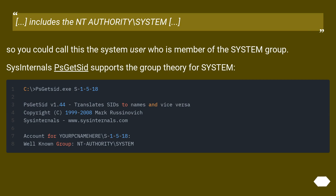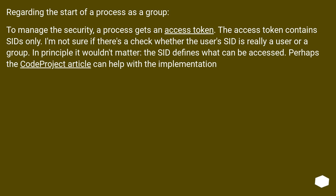Sysinternals' SETSID supports the group theory for system. Regarding the start of a process as a group: to manage security, a process gets an access token. The access token contains SIDs only. It's not certain whether there's a check that the user's SID is really a user or a group — in principle it wouldn't matter, since the SID defines what can be accessed. Perhaps the Kodi project article can help with the implementation.